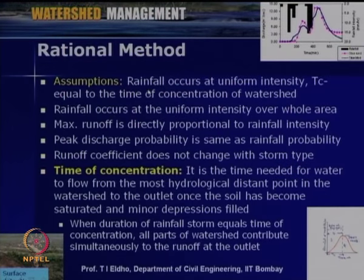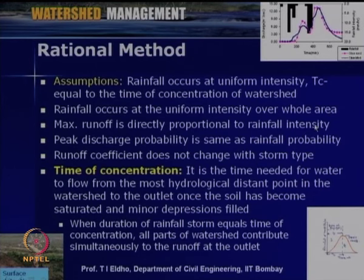The rational method is based upon several assumptions: rainfall occurs at uniform intensity with duration equal to the time of concentration Tc; rainfall occurs uniformly over the whole area; maximum runoff is directly proportional to rainfall intensity; peak discharge probability is the same as rainfall probability; and the runoff coefficient does not change with storm type. This rational method is not highly accurate but shows a tendency of the flow condition.